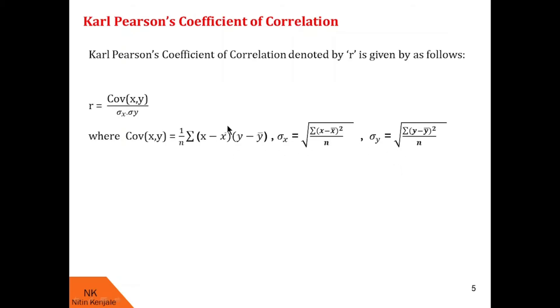When we substitute these formulas into this, we get r is equal to summation X minus X bar into Y minus Y bar whole divided by square root of summation X minus X bar square into summation Y minus Y bar square.